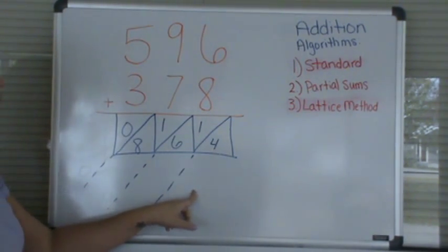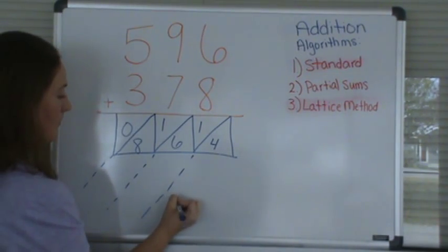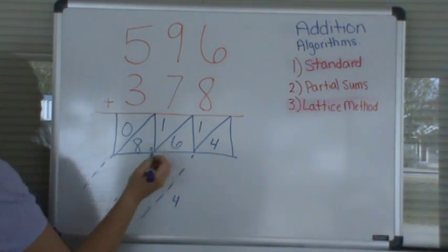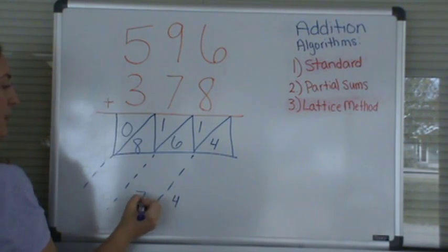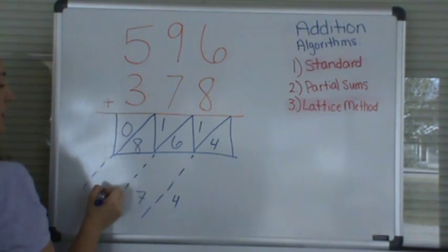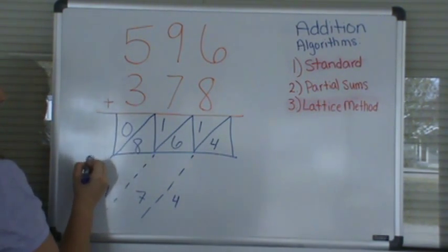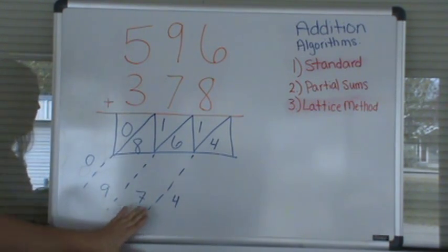So now we add our 4. There's nothing in the diagonal to add our 4 with, so we just record 4. And then we add 6 and 1, which is 7. 8 and 1, which is 9. And then our 0. So again, we have 974, and that's how you use the lattice method.